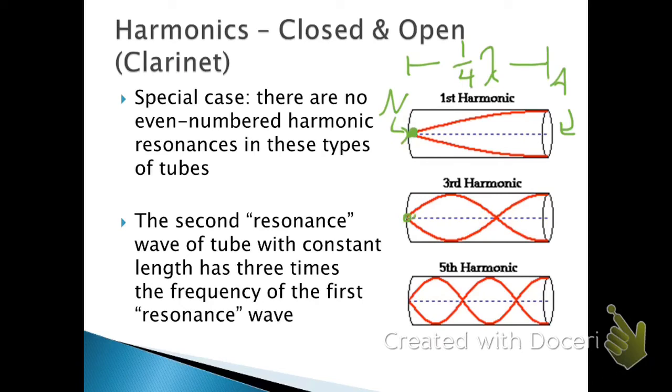The next harmonic up, I would fit, well there's half a wavelength and another quarter. So that'll be three quarter lambda in there. Now I've not decreased my wavelength by a factor of two, this time I've done it by a factor of three. So for this reason, if you've got one closed end and one opened end, you don't get any even numbered harmonics.